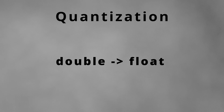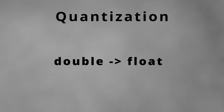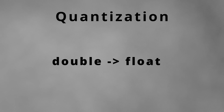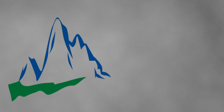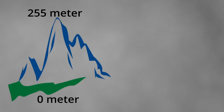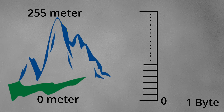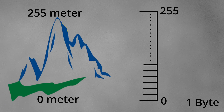Quantization sometimes comes at a cost. For example, if I have a double number which takes 8 bytes and I convert it to a float which takes 4 bytes, float has less precision compared to double so we might lose some precision. Now let's see how this rule applies to terrain. Imagine this is our terrain and the highest point is 255 meters and the lowest is zero. I want to store my terrain height map pixels in one byte. As you know, one byte can store a value between 0 and 255, so a height map pixel must be stored at an integer position — values like 1, 2, 3, 4, not for example 1.5.